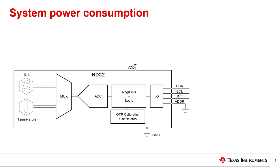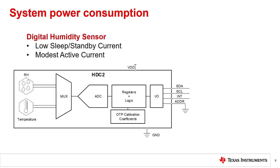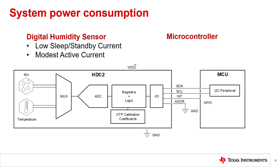While the power consumption of all the ICs in your system are important, calculating the lifetime of your battery-operated system based only on the humidity sensor would be a mistake. All systems with a digital humidity sensor will also have some kind of controller to read from the sensor and take actions accordingly. In the case of the HTC2 family of devices, this is typically an MCU with an I2C peripheral for communicating with the sensor. Many modern microcontrollers will have a full sleep mode, when the controller is essentially waiting for a wake signal, during which the MCU consumes negligible current or current similar to the HTC2 in sleep mode.